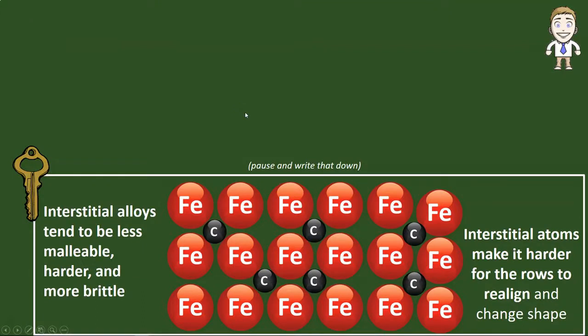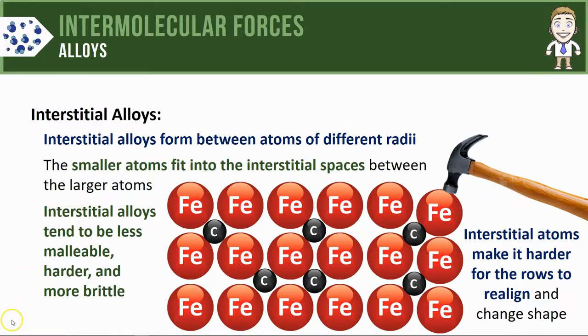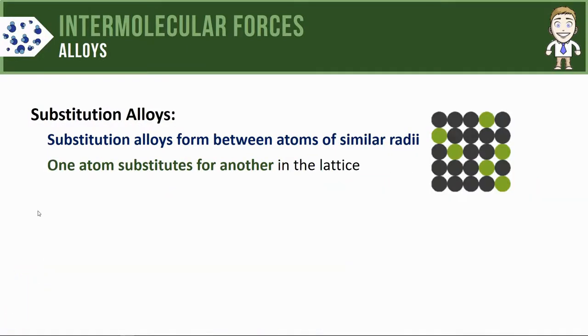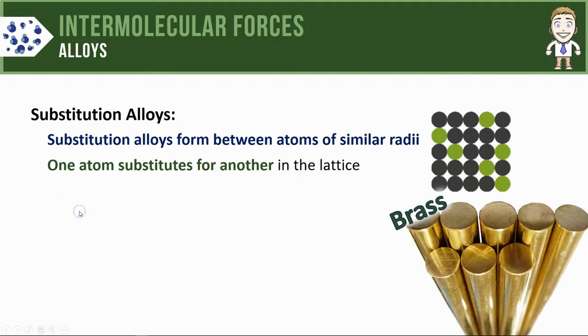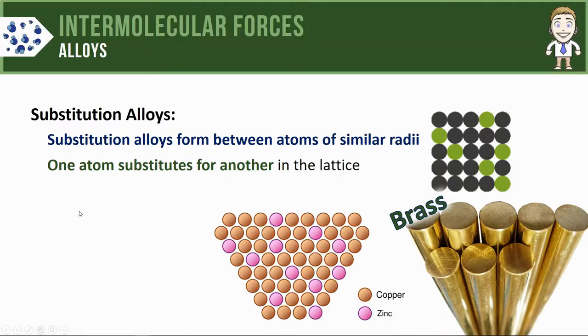Substitution alloys don't really have a predictable effect on the properties of the metal, but we should talk about one common example known as brass. Brass is made of a mixture of copper and zinc atoms shown here with brown and pink circles.